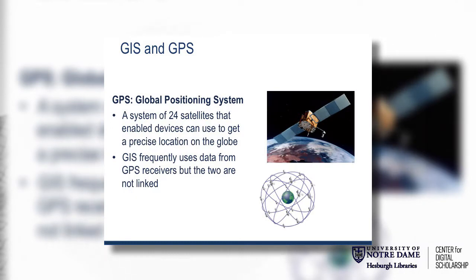One thing I want to discuss before we go further is a fundamental difference in acronyms that comes up a lot — the difference between GIS and GPS. GPS stands for Global Positioning System, and it's essentially a series of satellites orbiting the Earth that allows any device able to read the signals from these satellites to figure out exactly where it is on the surface of the planet. GIS often uses data from GPS receivers, from locational data, but is not inherently linked to the GPS system in any way.